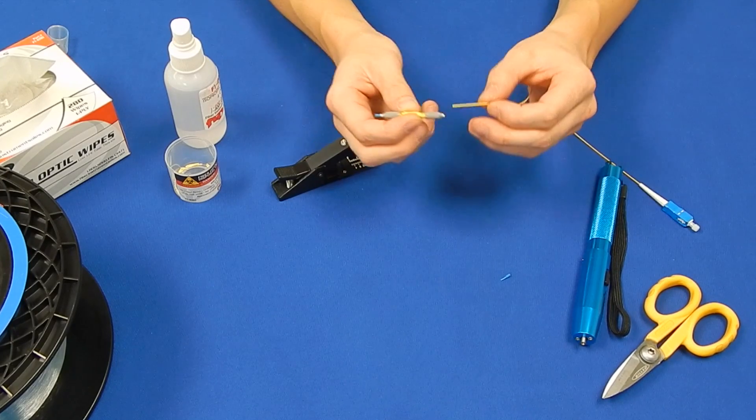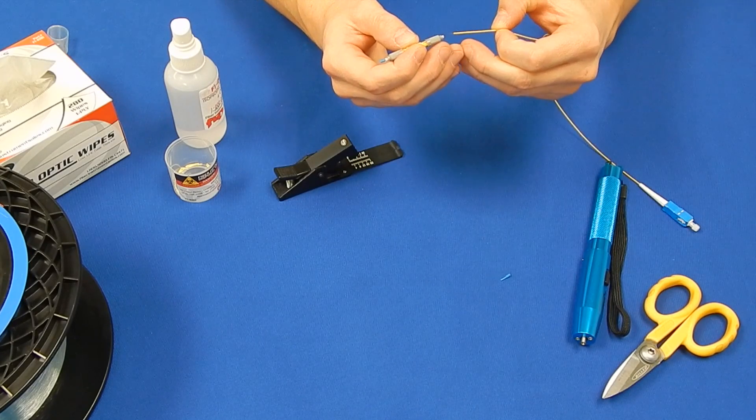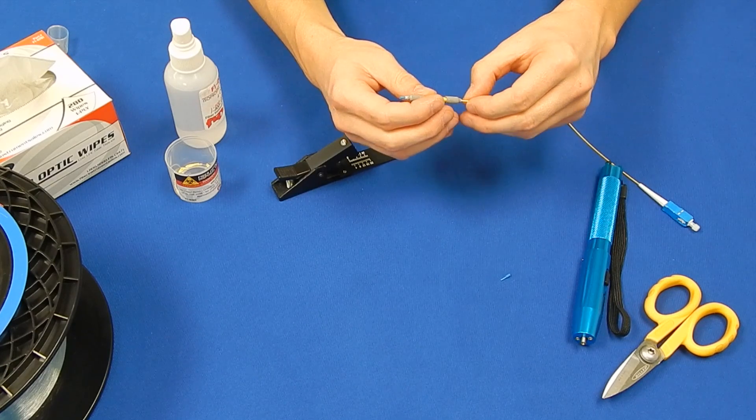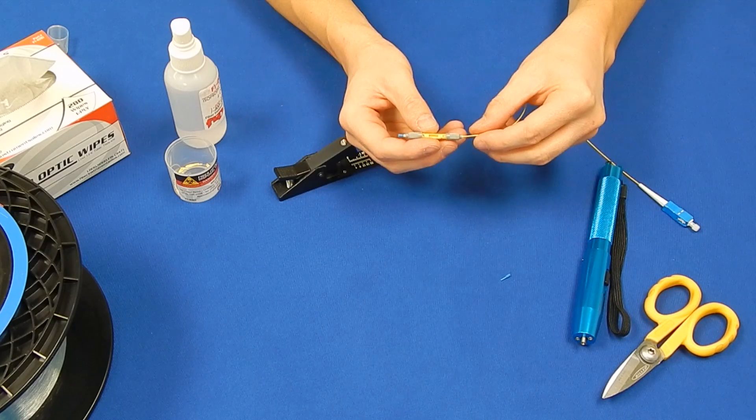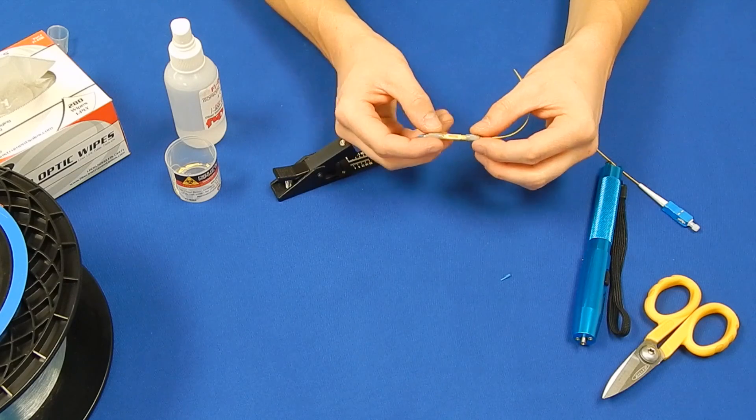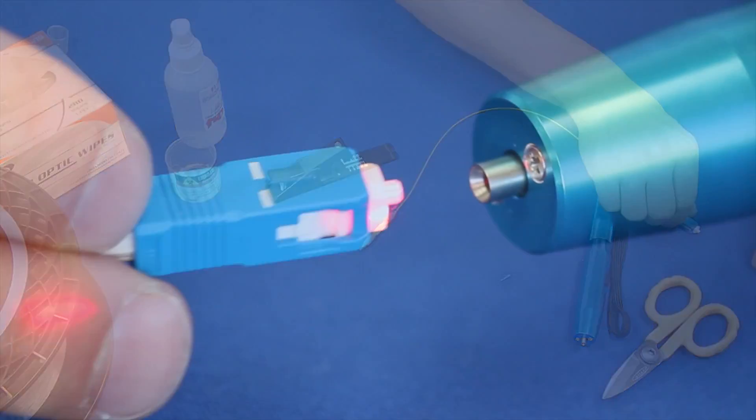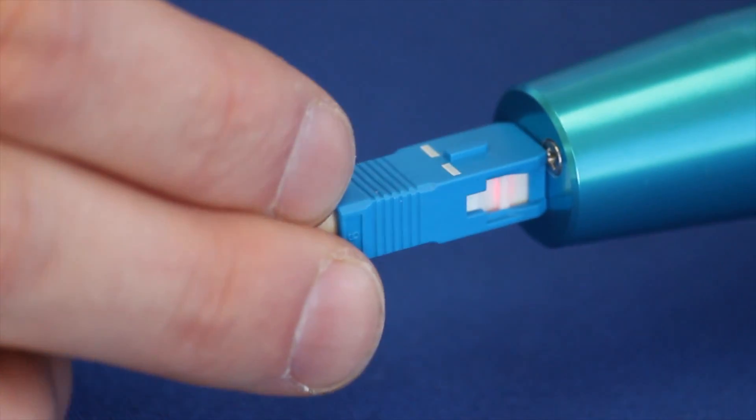Insert the fiber into the UltraSplice as shown. You will be able to see the fiber through the splice window and stop inserting when it is halfway through. Use the VFL as shown to aid in the insertion and mating of the splice.